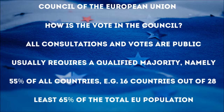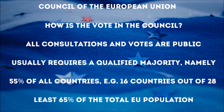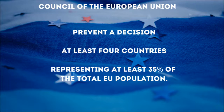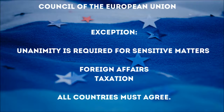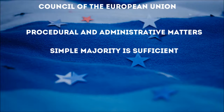How is the vote in the Council in general? All consultations and votes are public. Adoption of decisions usually requires a qualified majority, namely 55% of all countries — that means 16 countries out of currently 28 — which also make up at least 65% of the total EU population. To prevent a decision, at least four countries are required, representing at least 35% of the total EU population. But there is an exception: unanimity is required for sensitive matters such as foreign affairs and taxation, and there all countries must agree. For procedural and administrative matters, the simple majority is sufficient.